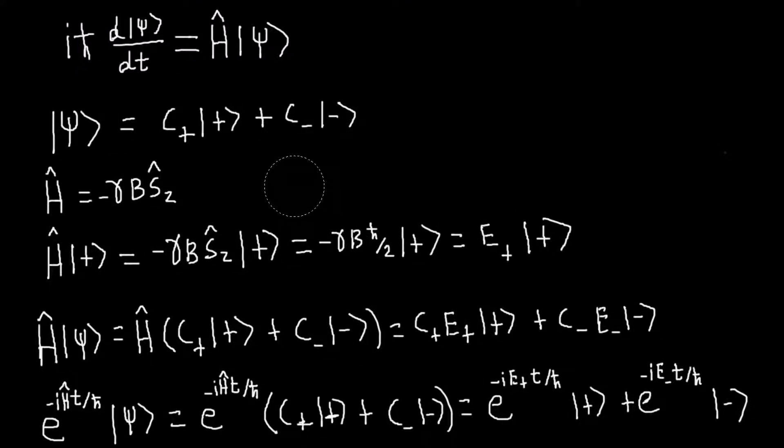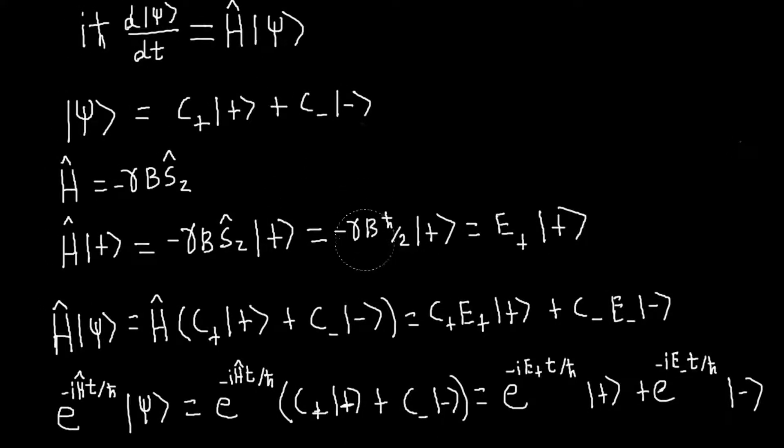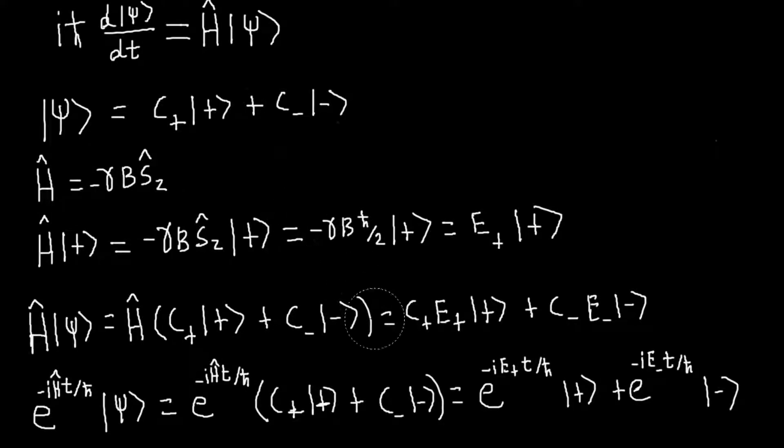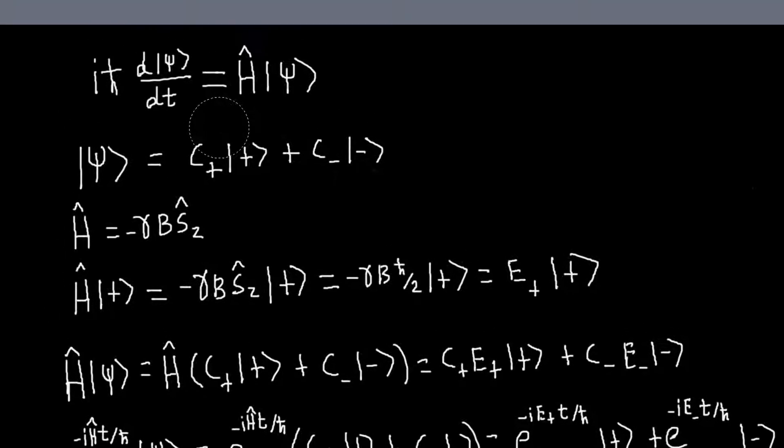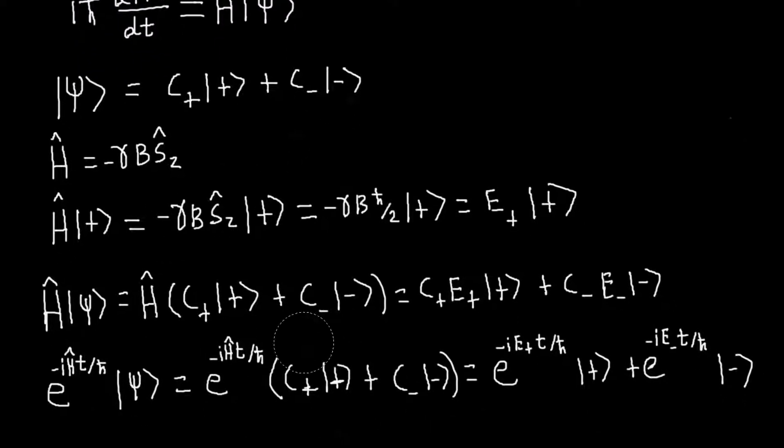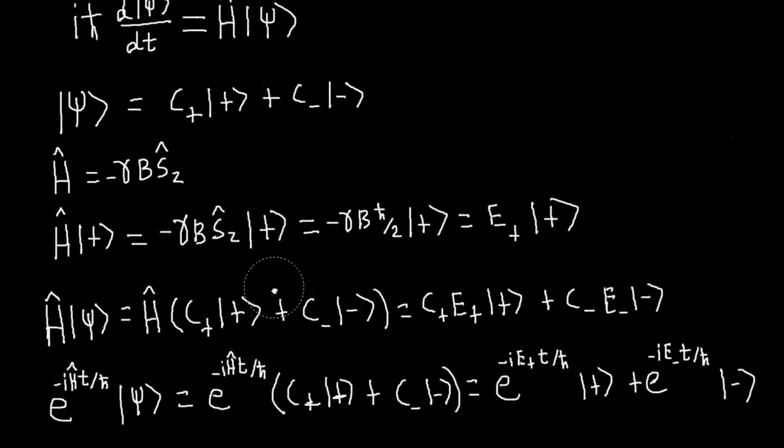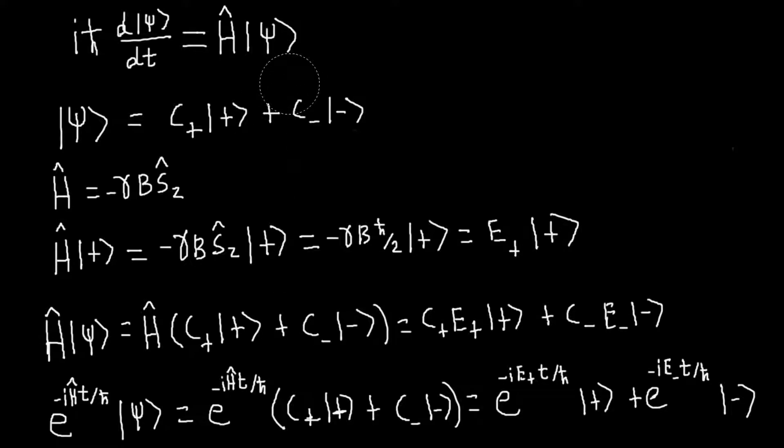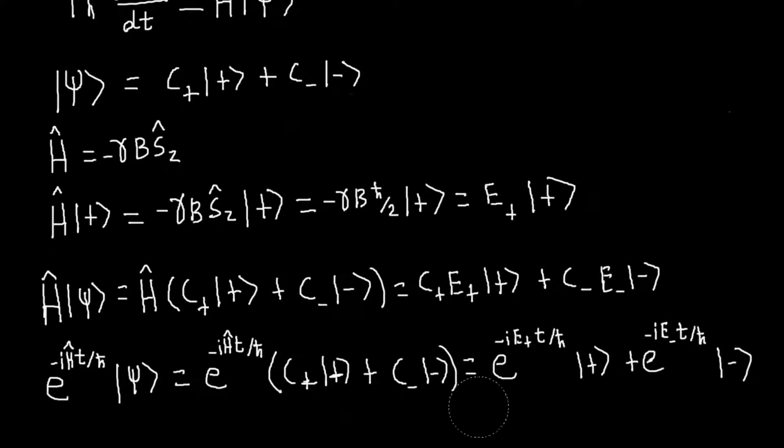And in most quantum mechanical problems, the problem isn't solving the Schrodinger equation, because once you've done this expansion, solving the Schrodinger equation is pretty easy. The problem that we'll face is that we won't initially know what the eigenstates of the Hamiltonian are. So if we don't know that, then there's no way for us to do any of this.